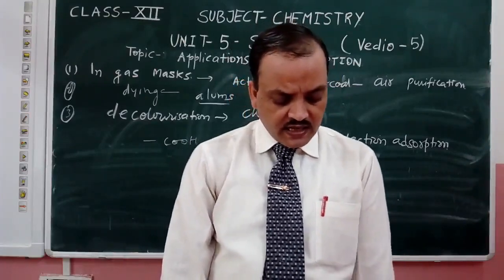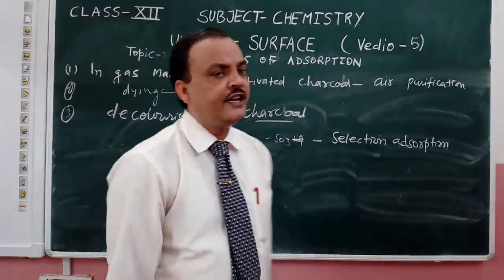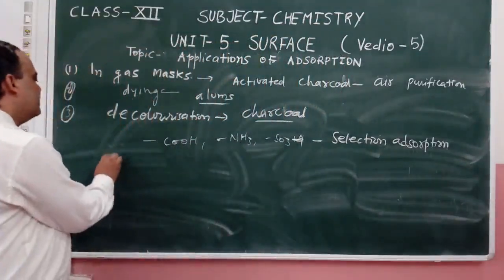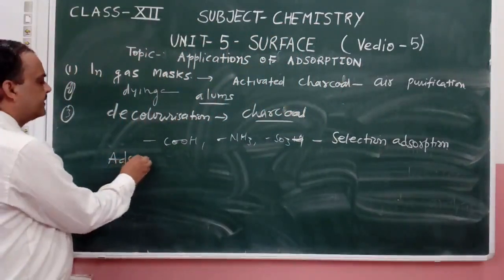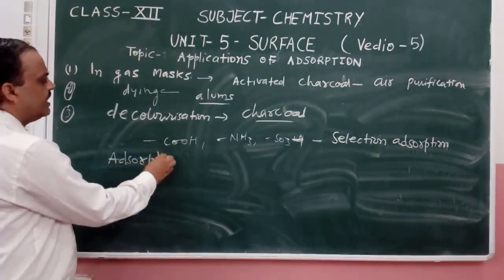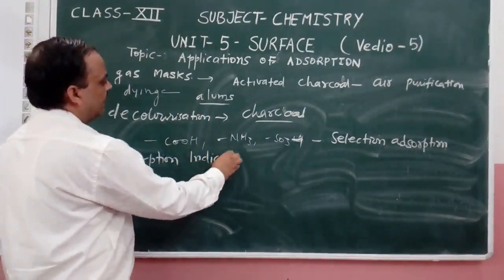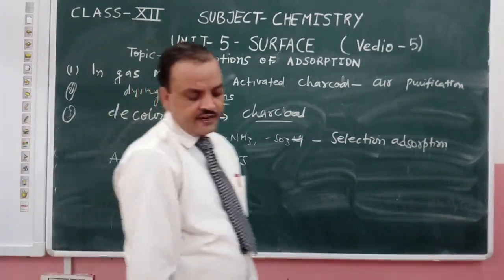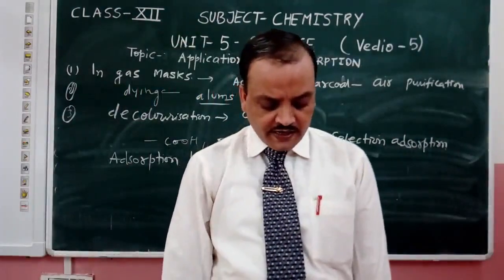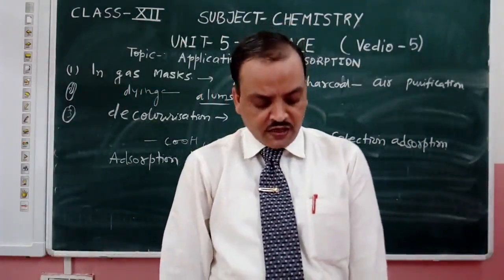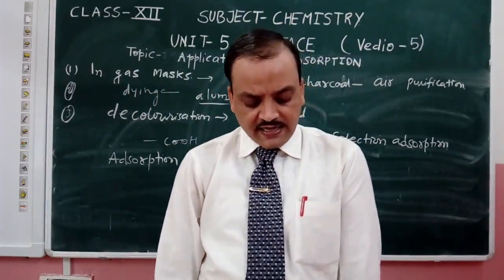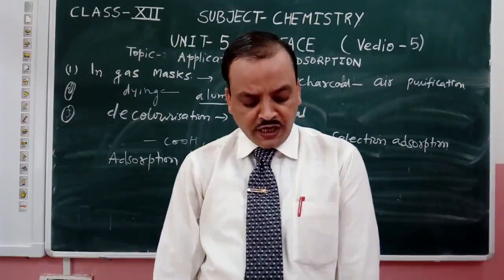Next: adsorption indicators. Many adsorption indicators are being used in volumetric analysis. Dyes such as eosin and fluorescein.